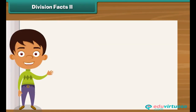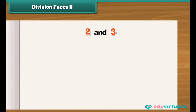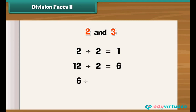Let us learn the division facts of two and three. Two divided by two is one. Twelve divided by two is six. Similarly, six divided by three is two.